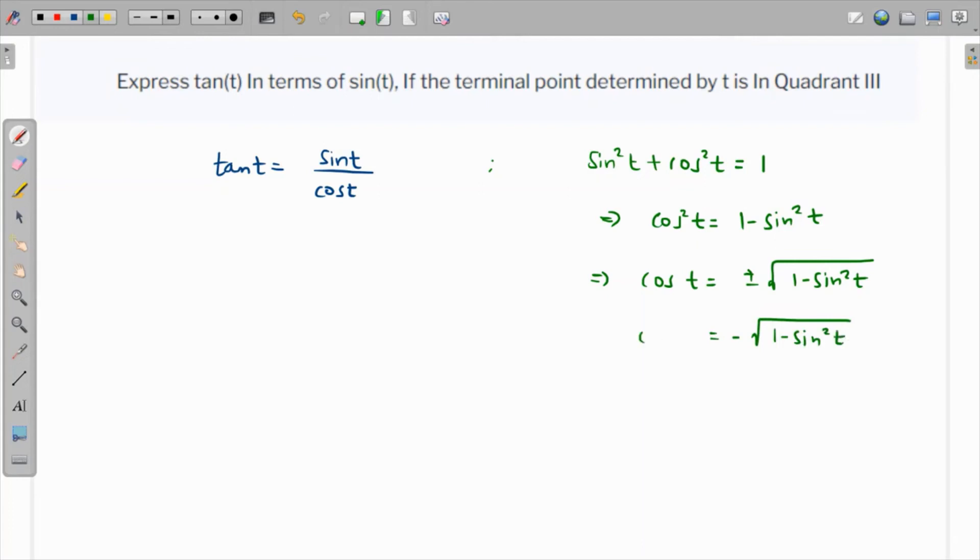So cos is negative means we are going to take a negative sign: negative square root of 1 - sin²t. And this cos(t) we are going to substitute over here.